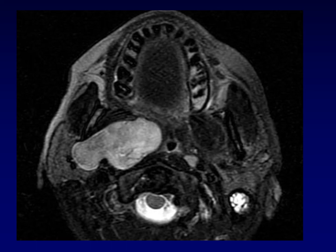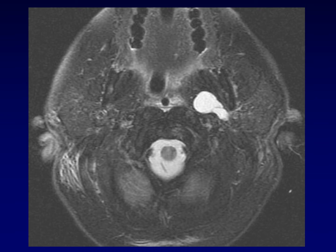Here's another example of a pleomorphic adenoma extending through the stylomandibular tunnel — that's pretty characteristic of a pleomorphic adenoma. When you see a mass in the deep lobe extending through the stylomandibular tunnel, it's even more likely to be a pleomorphic adenoma. Although this tumor is bright, it's not brighter than CSF. Here's another mass arising within the deep lobe, also knuckling out through the stylomandibular tunnel. What clinches it is the T2 signal even brighter than CSF, which is a very specific sign for pleomorphic adenoma.